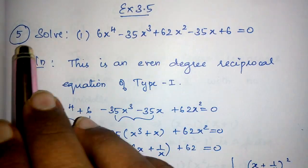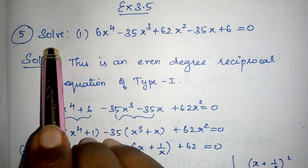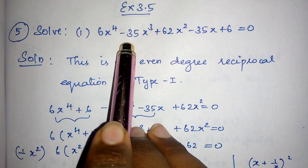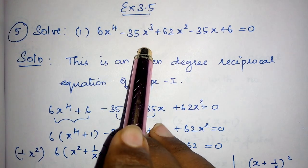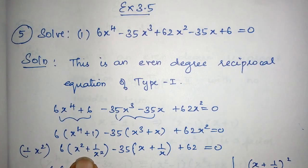Exercise 3.5, question number 5. Solve 6x^4 - 35x³ + 62x² - 35x + 6 = 0.